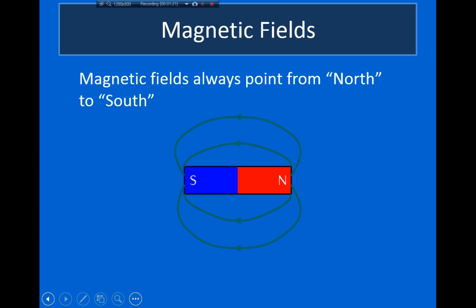Even though the magnetic force is written in terms of a magnetic field, we're not going to worry about where these magnetic fields come from or how we calculate their strength in this video — we'll cover that in a later video. Most of you know that magnetic fields can be created by permanent magnets, and when we draw the magnetic field lines generated by a magnet,